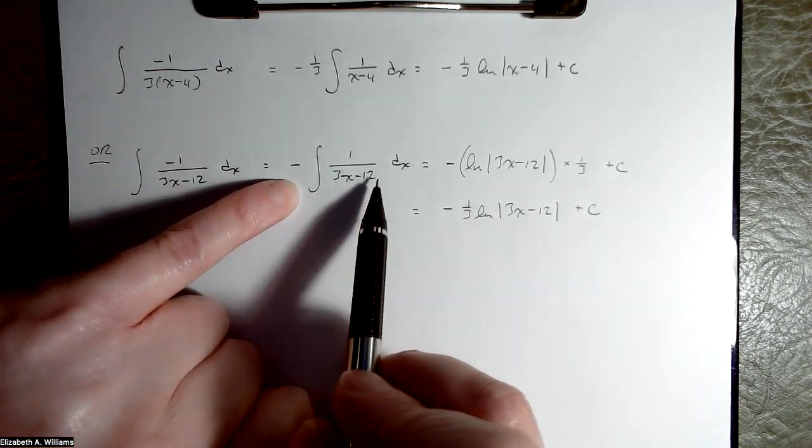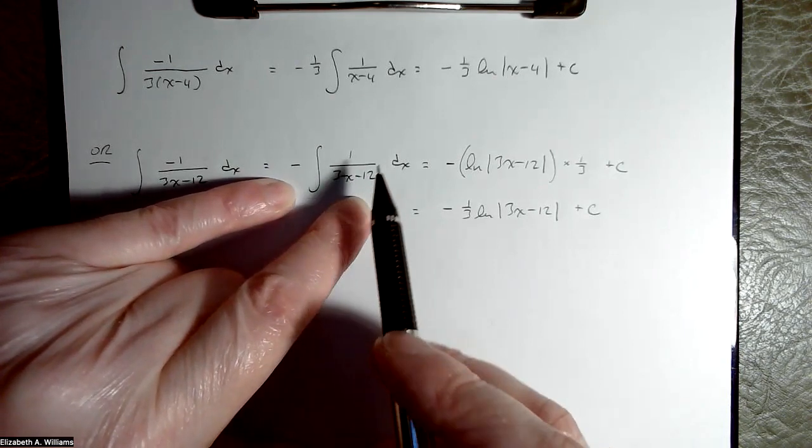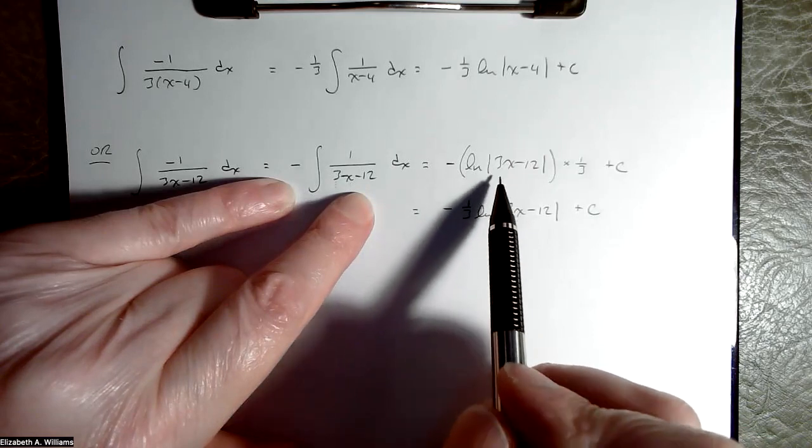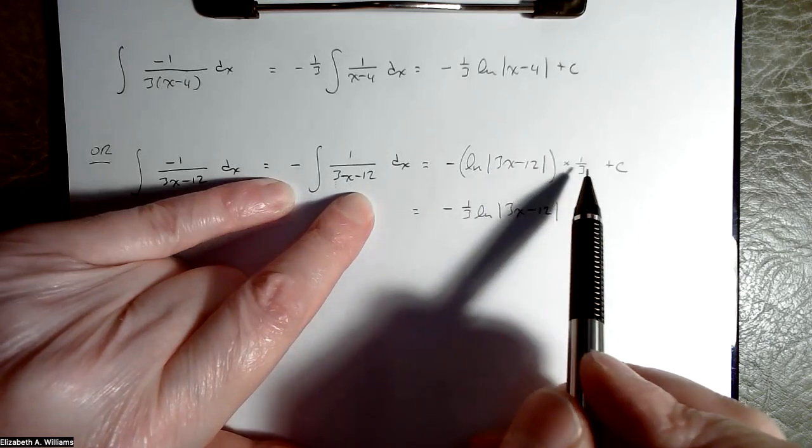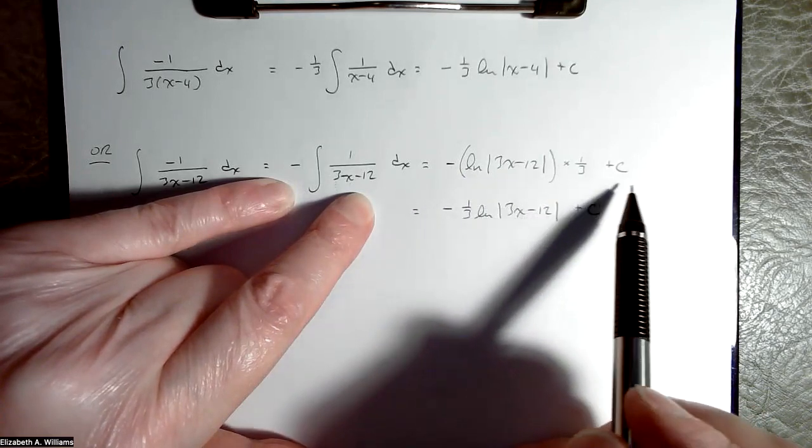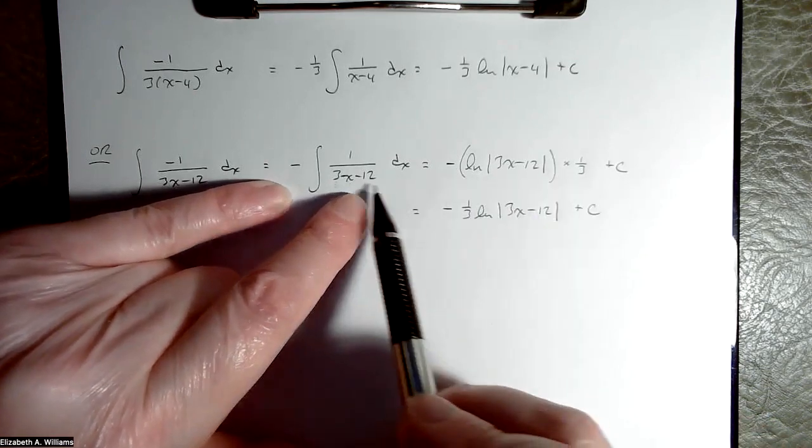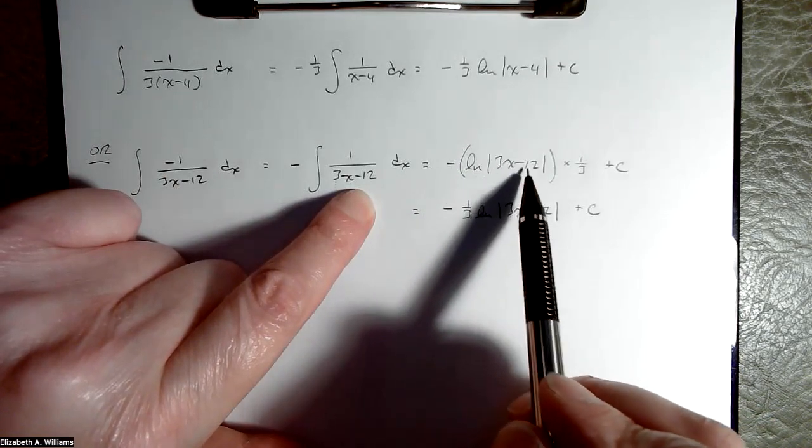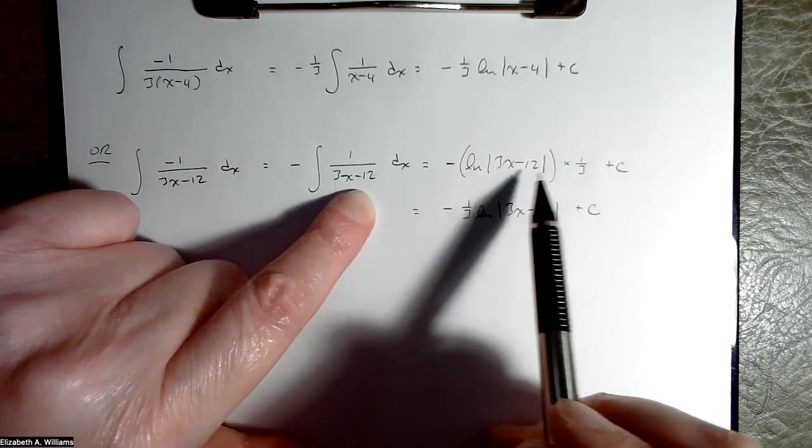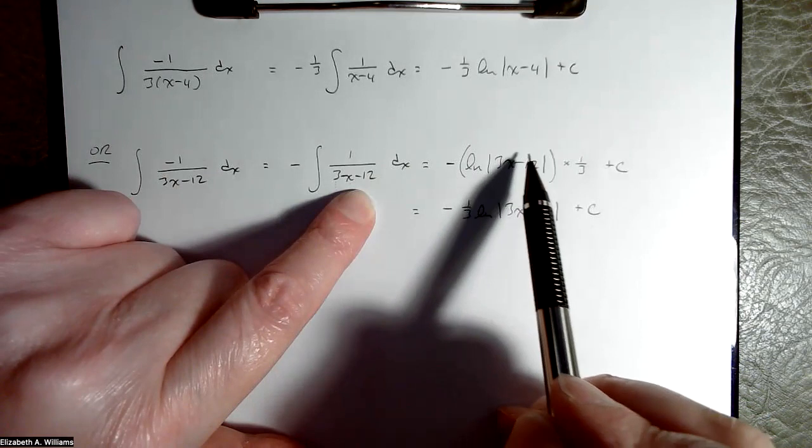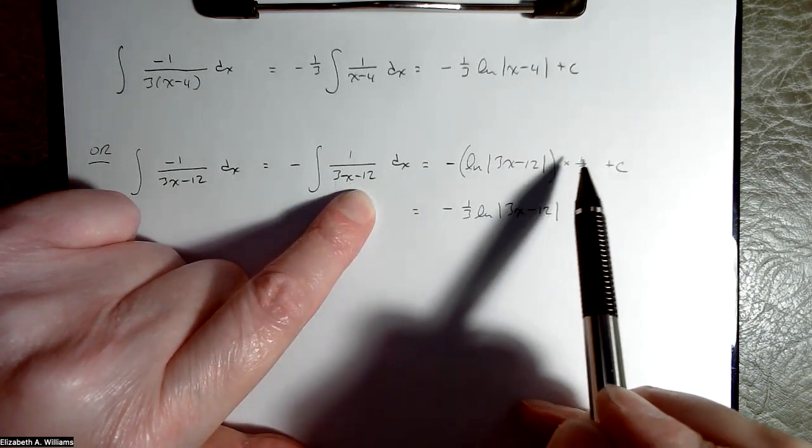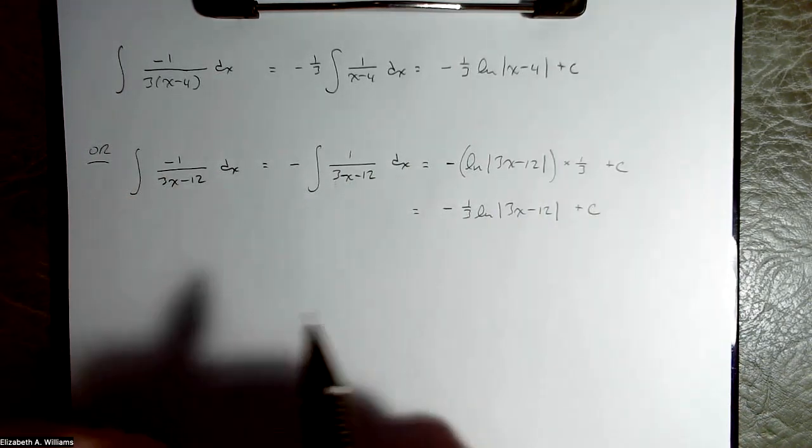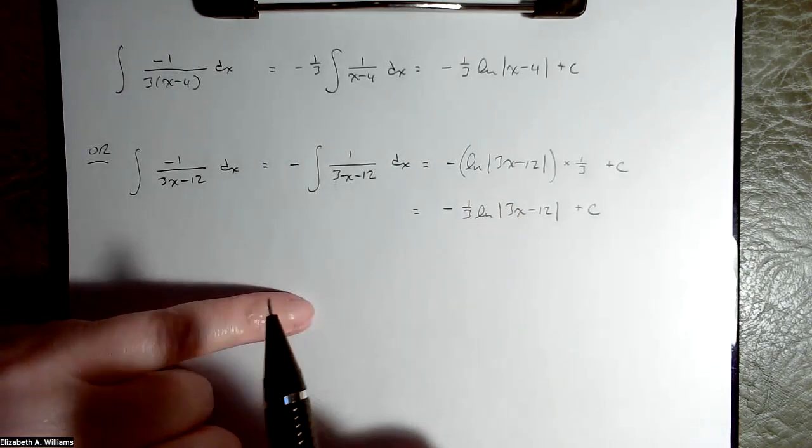But what if you didn't see that, or what if you were handed something that was already multiplied through, or maybe the number doesn't factorize off nicely? So if you multiplied the 3 through, I would definitely yank the negative out, always. This sucker, it's a variant on 1 over x, integrating 1 over x. So it's going to be natural log of that 3x minus 12 expression. But because of the 3 on the x, we multiply by 1/3, and that's because of chain rule.